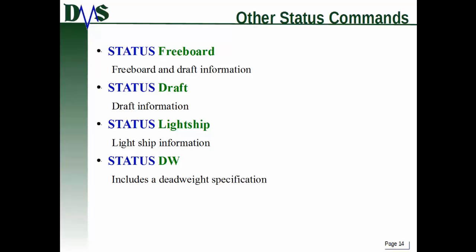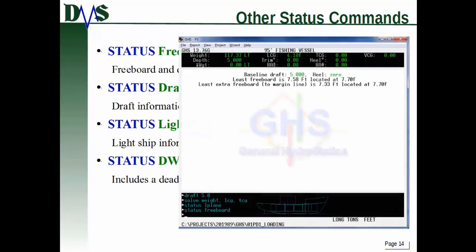A few other status commands: 'status freeboard' reports freeboard and draft information. It's key because depending on margin line orientation and vessel trim, you might not know where along your ship the smallest freeboard is. GHS automatically finds the location of minimum freeboard. 'Status draft' gives draft information if draft mark locations are defined. 'Status lightship' gives lightship information. 'Status DW' includes all deadweight information. The freeboard example shows it reporting the least freeboard and its location.